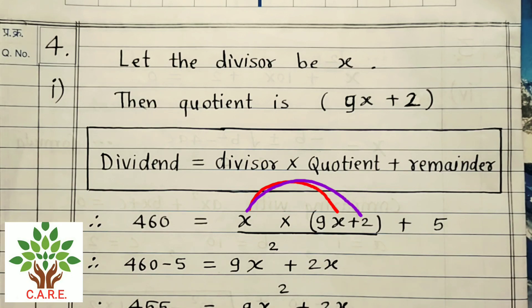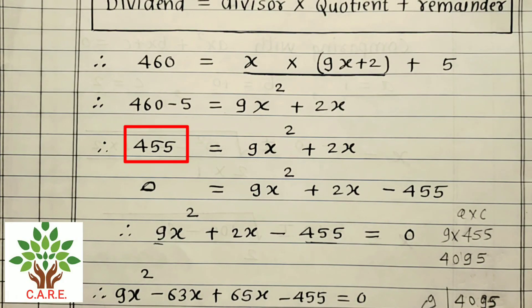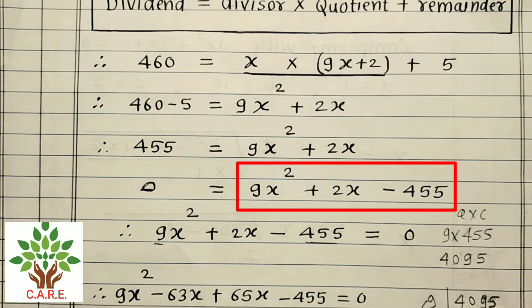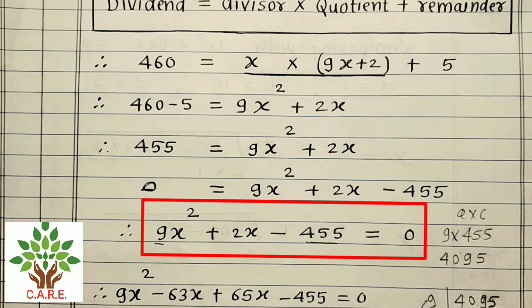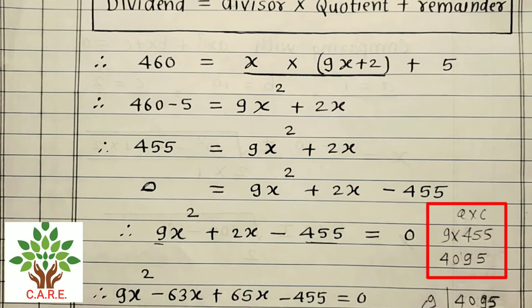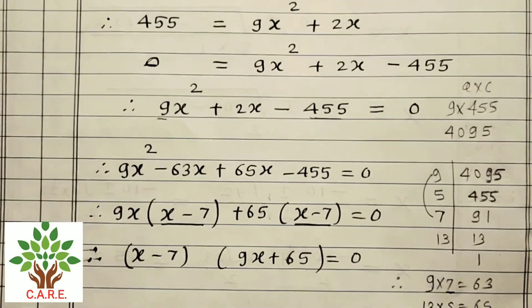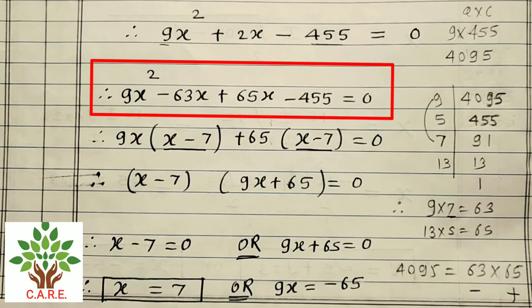Multiplying x into the bracket: 460 − 5 = 9x² + 2x. Therefore, 455 = 9x² + 2x. Rearranging: 0 = 9x² + 2x − 455. Therefore, 9x² + 2x − 455 = 0.